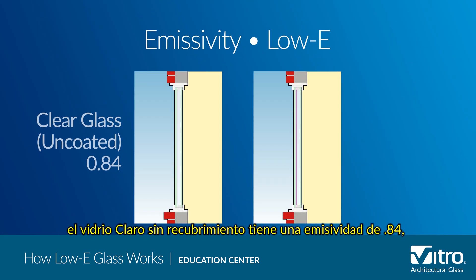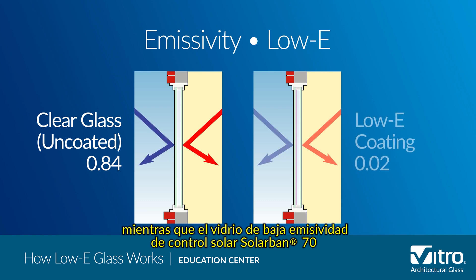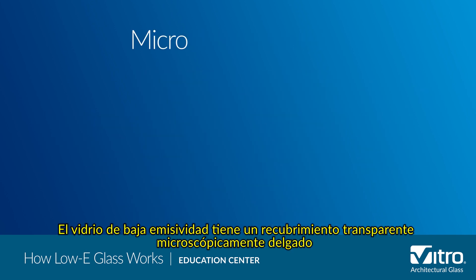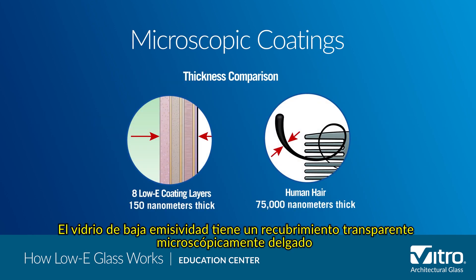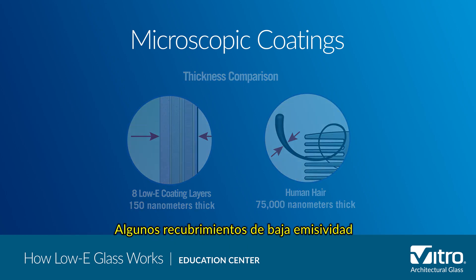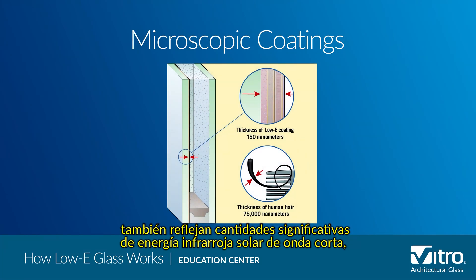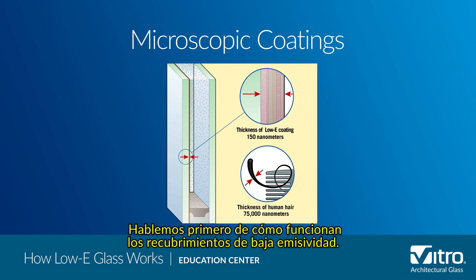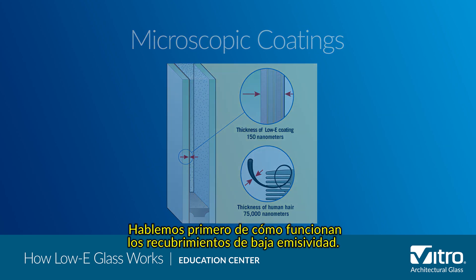This is where low-e glass coatings come into play. For example, uncoated glass has an emissivity of 0.84, while Solar Band 70 Solar Control low-e glass has an emissivity of 0.02. Low-e glass is a microscopically thin transparent coating that reflects long-wave infrared energy, or heat. Some low-e coatings also reflect significant amounts of short-wave solar infrared energy.